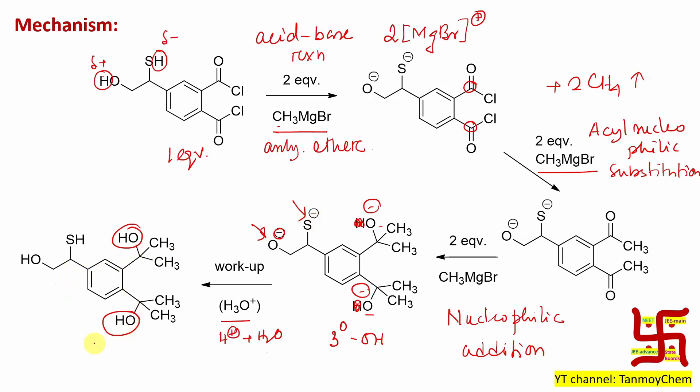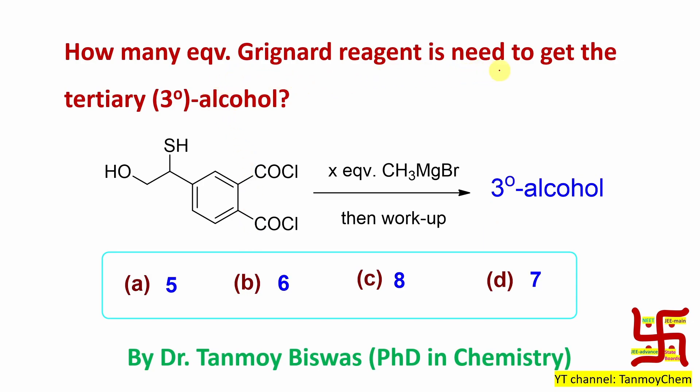So this is actually our product. So look at first case 2 equivalents, second case 2 equivalents, total 4 equivalents. Third step, total 6 equivalents of Grignard reagent is consumed. So how many equivalents of Grignard reagent is needed to get the tertiary alcohol? Obviously here 6 equivalents.